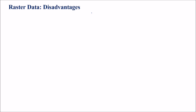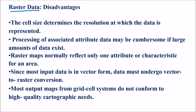Raster data disadvantages: cell size determines the resolution at which data is represented. Processing of associated attribute data will be tedious and cumbersome with large amounts of data. Raster maps normally reflect only one attribute or characteristic of an area like elevation or intensity value. Since most input data is in vector form, data must undergo vector-to-raster conversion and vice versa. Most output maps from grid cell systems do not conform to high quality cartography needs.